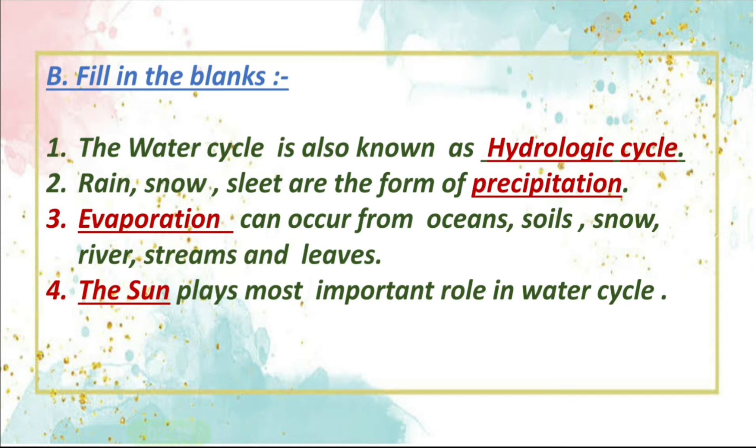Fourth, dash plays most important role in water cycle. Here answer is, the sun. The sun plays most important role in water cycle. As you know, that sun is the power source or heating source from which water cycle starts. So, now we have completed our fill in the blanks.